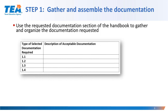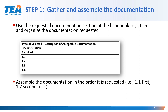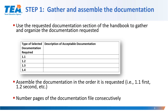Step 1 includes gathering and assembling the documentation. LEAs are going to want to use the requested documentation section of the handbook to gather and organize the documentation that is being requested. The LEA should assemble the documentation in the order it is requested — for example, they should place their documentation with 1.1 being addressed first, 1.2 second, and so on. The LEA should also number their pages of the documentation file consecutively.